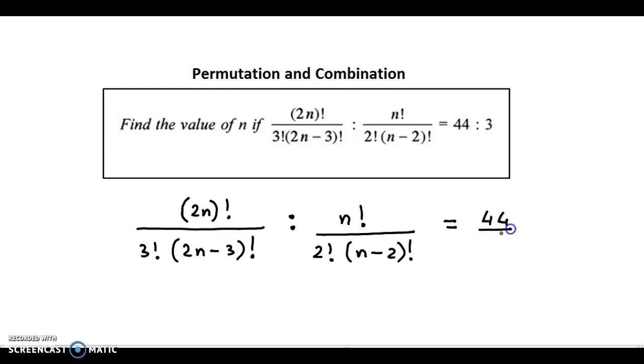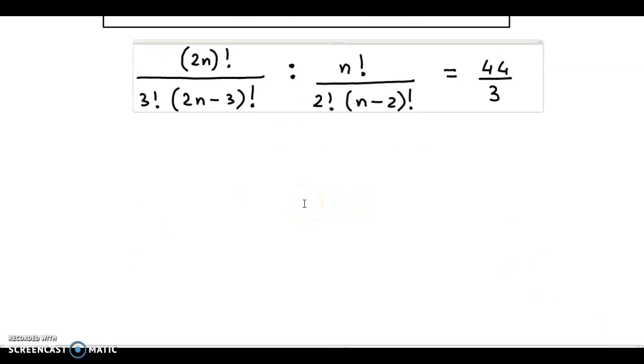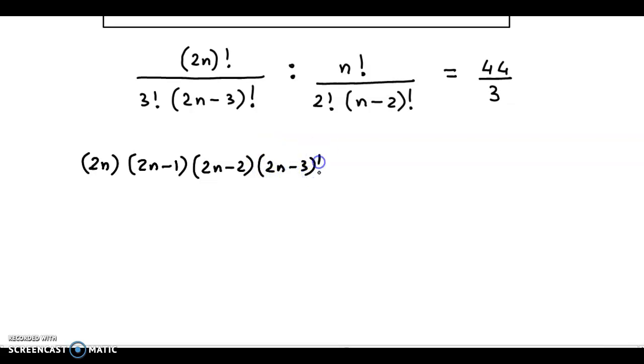Now this could be written as 44 upon 3. Now we try and simplify this. We could easily transform (2n)! into (2n-3)! by splitting this factorial. So we have 2n(2n-1)(2n-2)(2n-3)!.